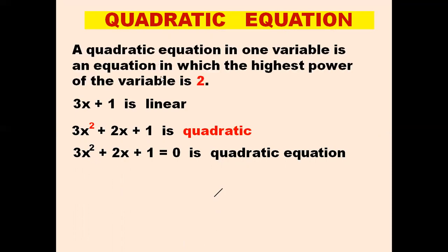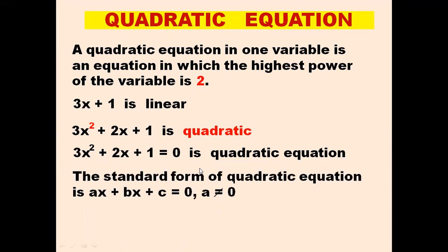What is a quadratic equation? A quadratic equation in one variable is an equation in which the highest power of the variable is 2. So here the highest power of the variable is 2, so this is a quadratic equation. The standard form of a quadratic equation is given by ax² plus bx plus c equals to 0, where a is not equal to 0.